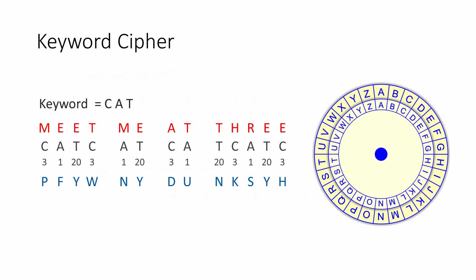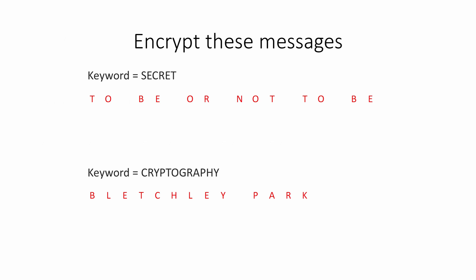Here are some plaintext messages you can try encrypting yourself with the Keyword Cipher. Each message uses a different keyword. Pause now to give them a go — this is not something you can do in a hurry. You'll see the solutions when you resume playing the video.